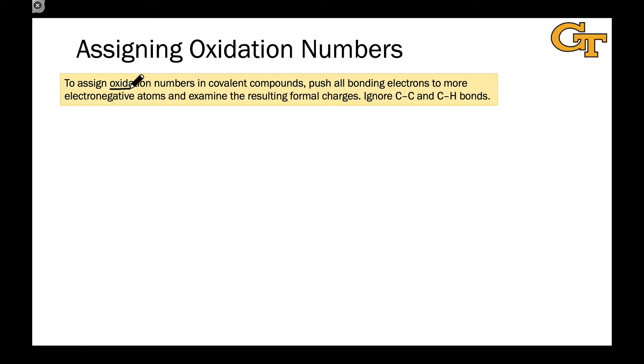Oxidation number is a concept you may be familiar with from your introductory chemistry course. And just as in that course, we can assign oxidation numbers to carbons and really any atom within an organic structure in a covalent compound.